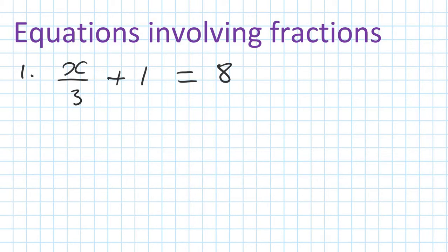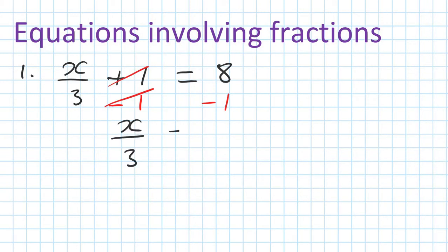Step number 1 — what we need to do is get rid of the 1 first. The way to go about this is we do the opposite. Get rid of the 1 because it's plus 1, so we do minus 1 on the left, then minus 1 on the right. This one's gone, so on the left you're left with x over 3 is equal to 7.